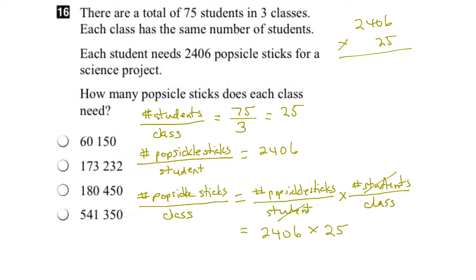So 5 times 6 is 30, carry the 3. 5 times 0 is 0, plus 3 is 3. 5 times 4 is 20, carry the 2. 5 times 2 is 10, plus 2 is 12. Bring down the 0. 2 times 6 is 12, carry the 1. 2 times 0 is 0, plus 1 is 1. 2 times 4 is 8. 2 times 2 is 4.